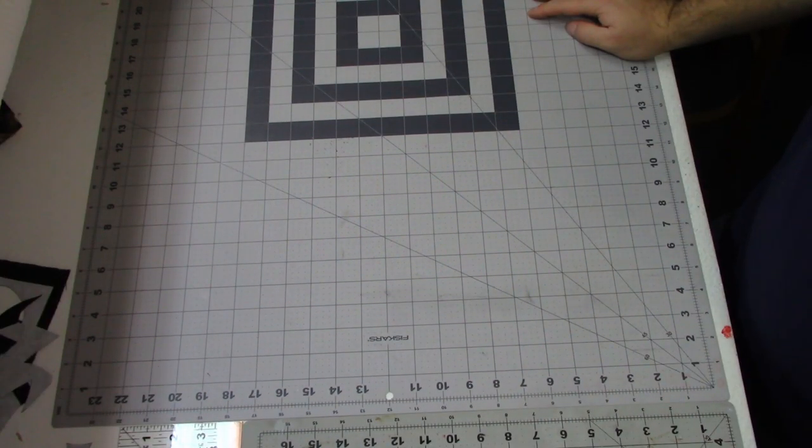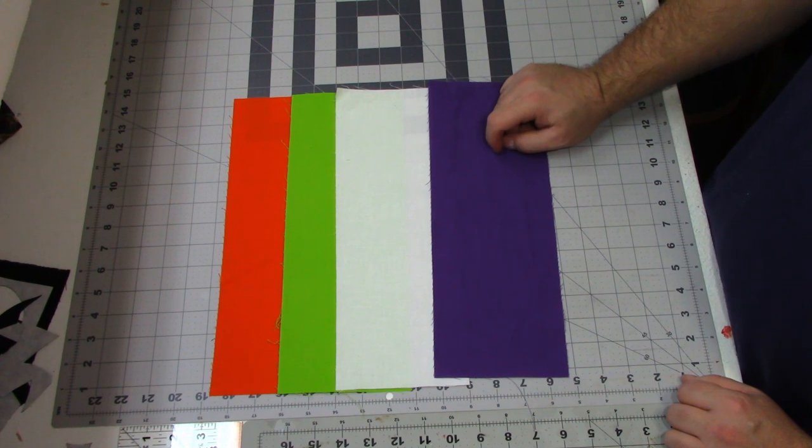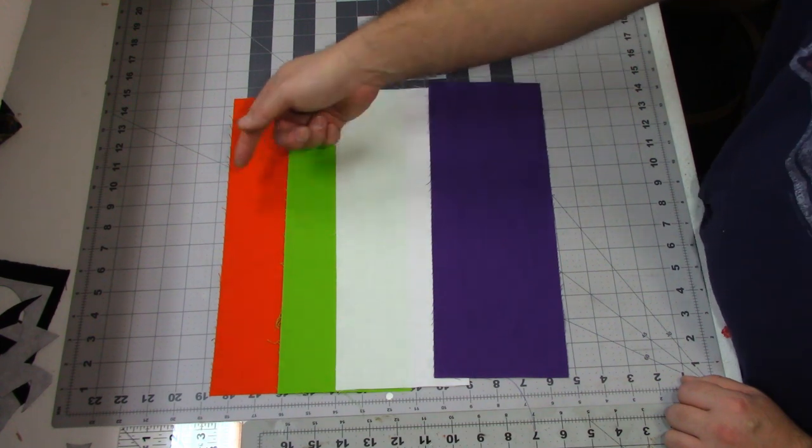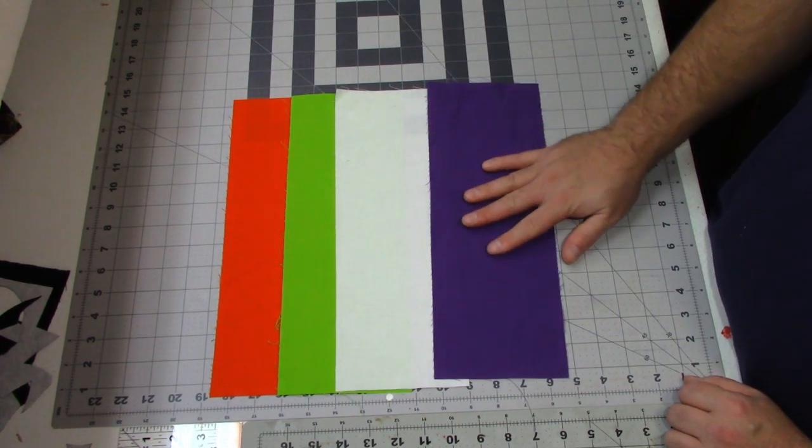So the things you're going to need to make these treat bags are one piece of outside fabric that measures 5 inches by 14 inches. Now I'll be doing four different patterns: a pumpkin, Frankenstein's monster, a ghost, and a vampire.